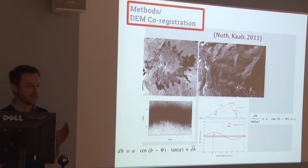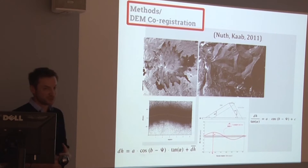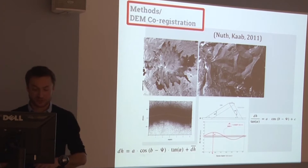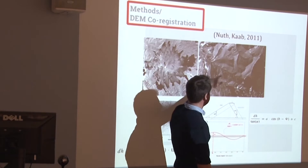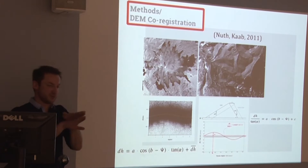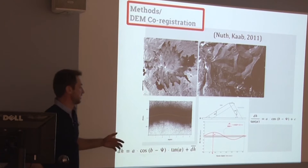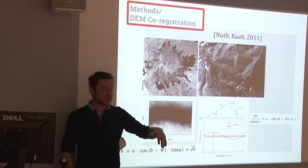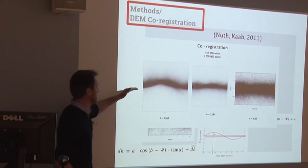In the ideal situation you would have ground control points, which we didn't have. So we went to the path suggested in a publication — the Nuth & Kääb semi-automatic co-registration of two digital elevation models. Because if they are shifted relative to each other, you will have relief-like structures in the difference map. If you plot the surface elevation changes versus aspect, you will see a sinusoidal signal — and that's exactly what we had.